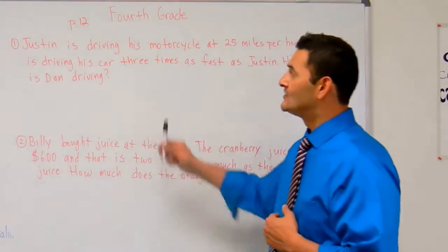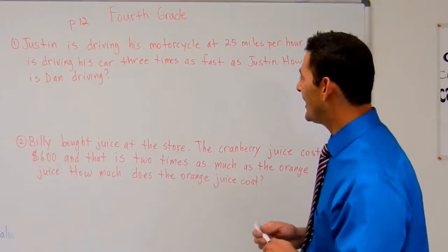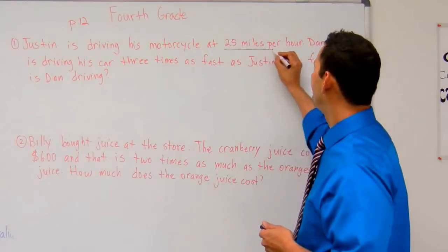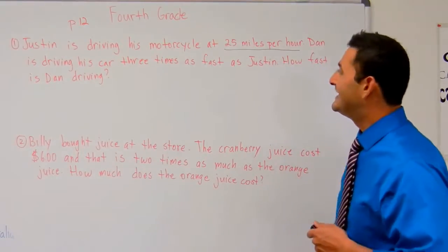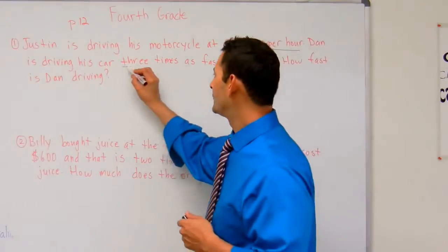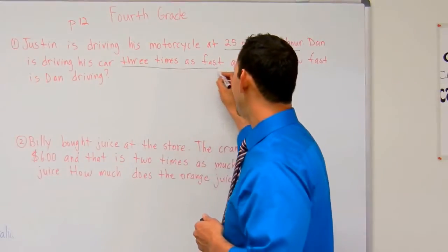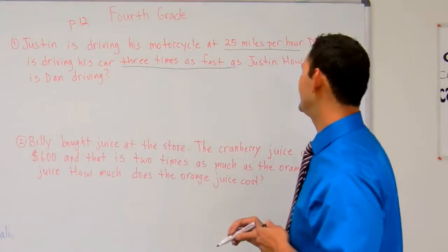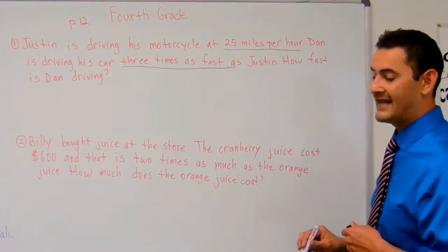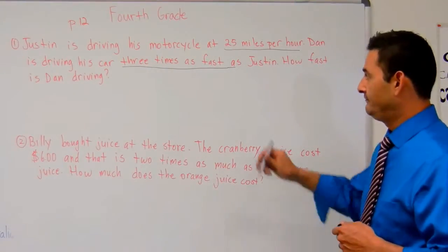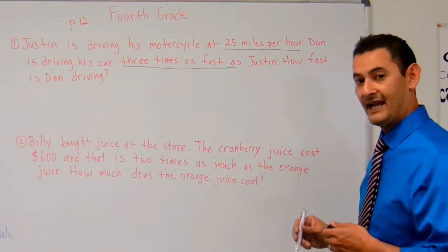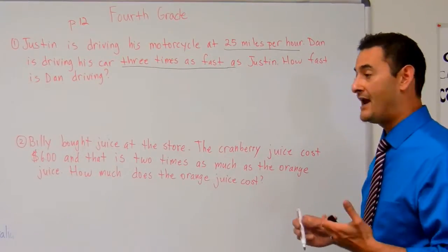Number 1 says: Justin is driving his motorcycle at 25 miles per hour. Dan is driving his car 3 times as fast as Justin. How fast is Dan driving? The key words here are 'as fast as' — we're doing a comparison.